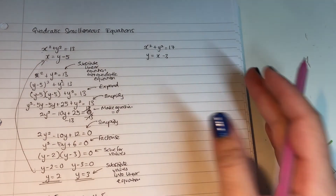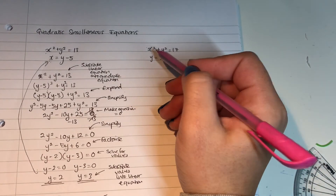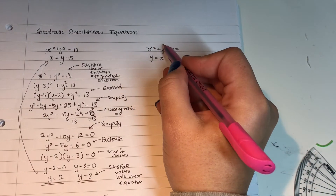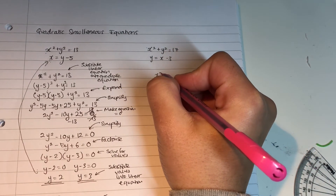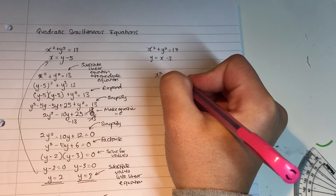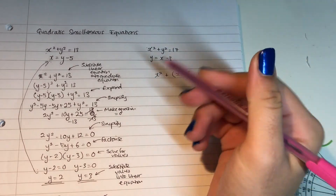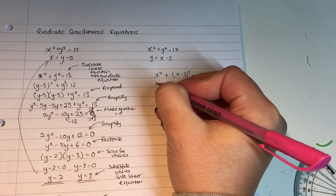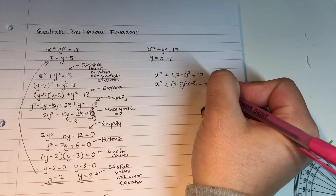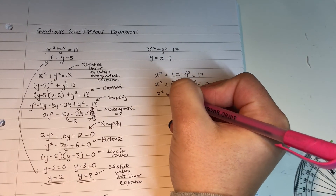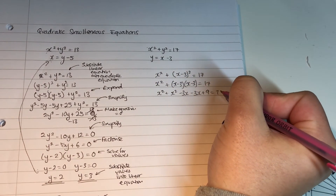So you've attempted the second question. This is my quadratic and this is my linear. I'm going to substitute my linear equation into my quadratic equation — so instead of saying y I will say x − 3. So I'm going to say x² + (x − 3)² = 17. My next step is to expand my brackets: x² + (x − 3)(x − 3) = 17, giving x² + x² − 3x − 3x + 9 = 17.